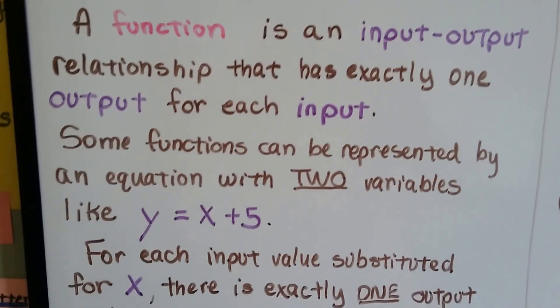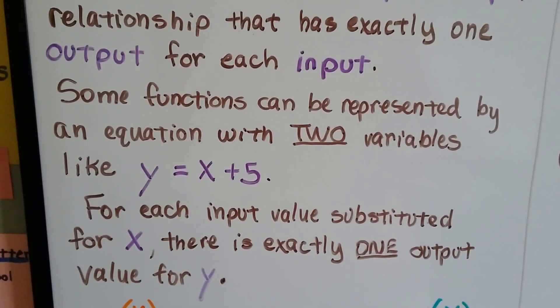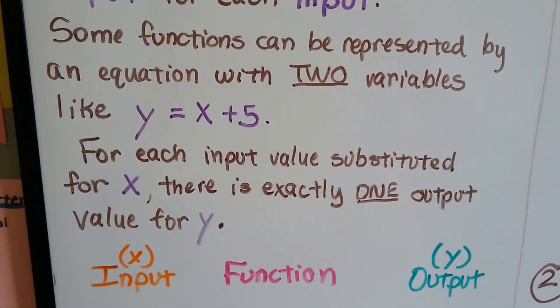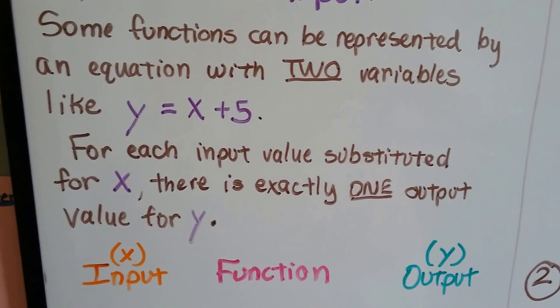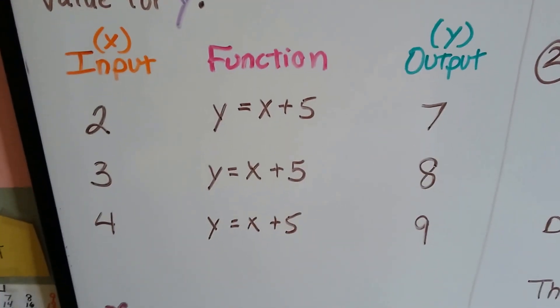Well, if you remember from 6th grade, some functions can be represented by an equation with two variables, like y equals x plus 5. For each input value substituted for x, there's exactly one output value for y. So here's our input-output.